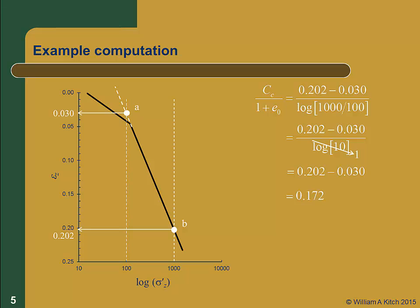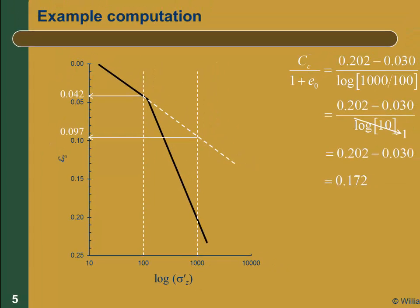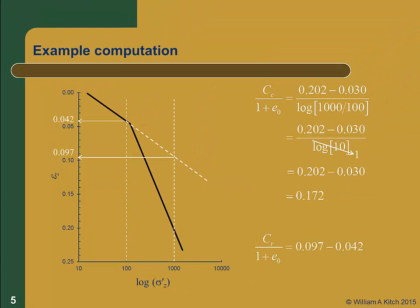The recompression ratio is computed in a similar fashion. We extend the recompression curve until it intersects the two vertical lines. The recompression curve intersects these lines at strains of 0.097 and 0.042, so the recompression ratio is simply 0.097 minus 0.042, or 0.055. Notice that both indices are dimensionless, so we don't need to know the units of effective stress. It's really quite simple, especially if you use the trick of picking points that are a log cycle apart.